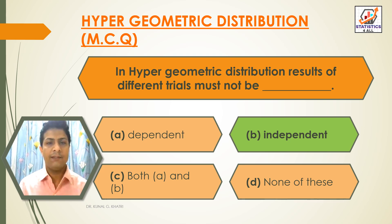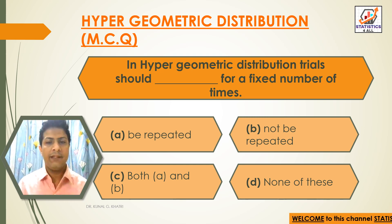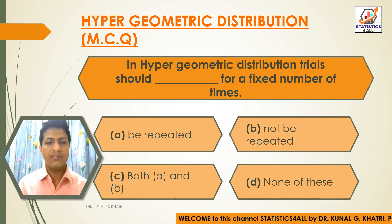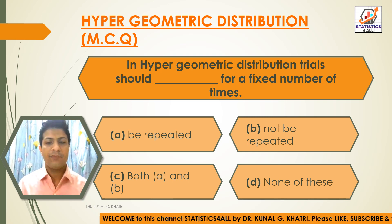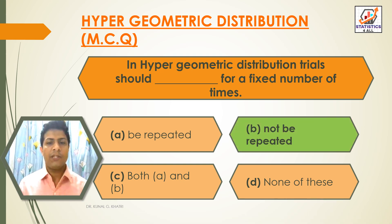Next question: In Hypergeometric distribution, trials should ___ for a fixed number of times. Option A: Be Repeated, Option B: Not Be Repeated, Option C: Both A and B, Option D: None of these. The answer is Option B — Not Be Repeated. In Hypergeometric distribution, trials should not be repeated for a fixed number of times.